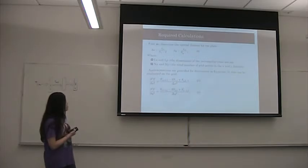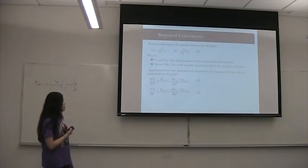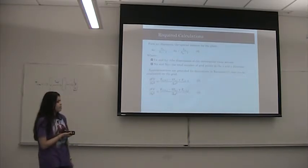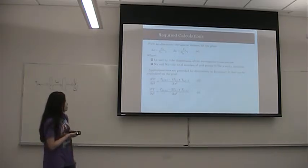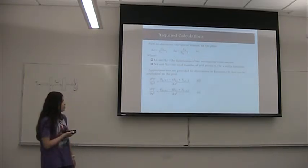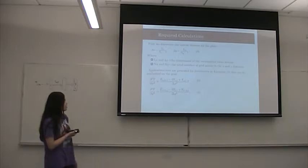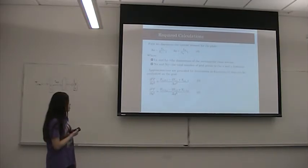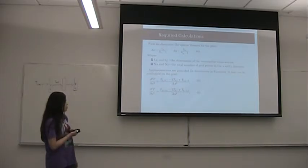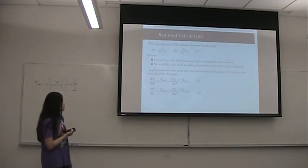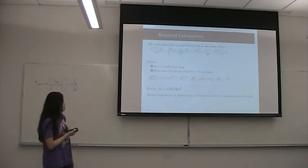So first, we have to discretize the spatial domain for the plate, where LX and LY are the dimensions of the rectangular cross section, and NX and NY are the number of grid points in the X and Y direction. And then further approximations are used in equations 5 and 6 to simplify the original equation.